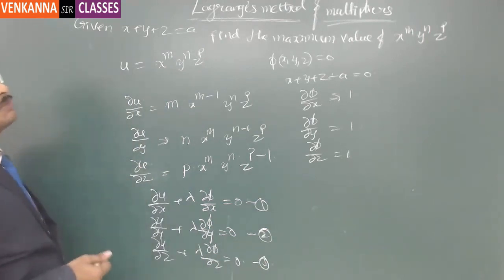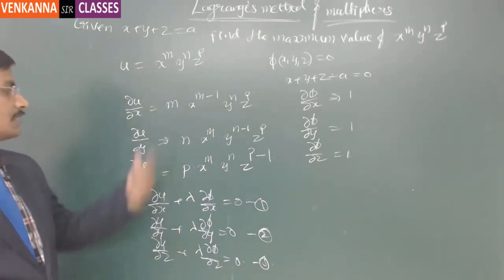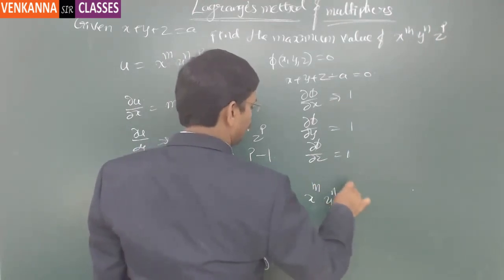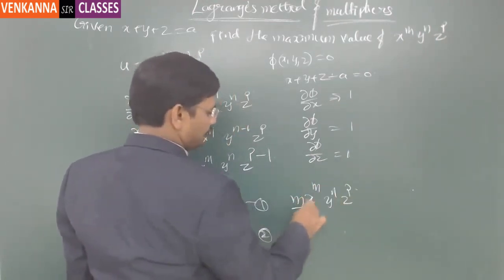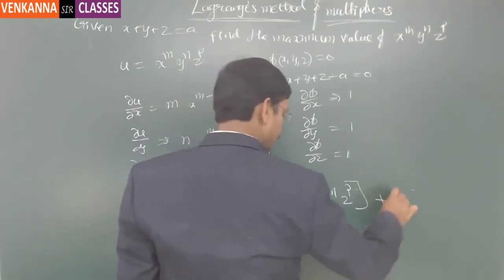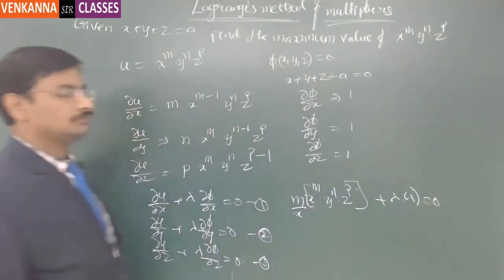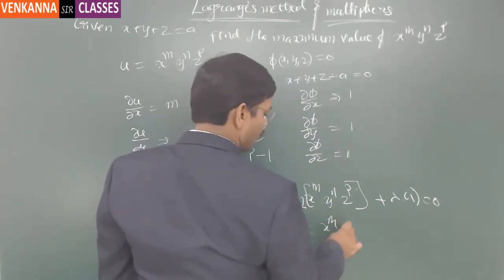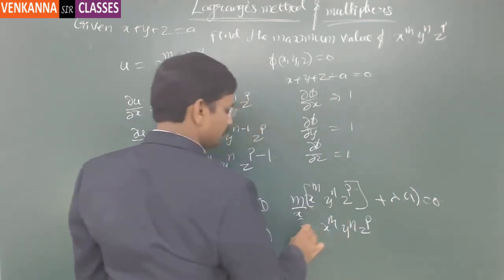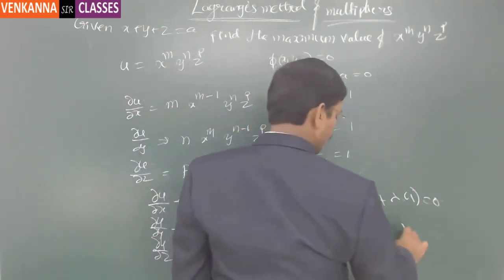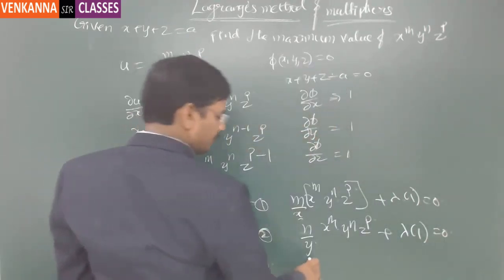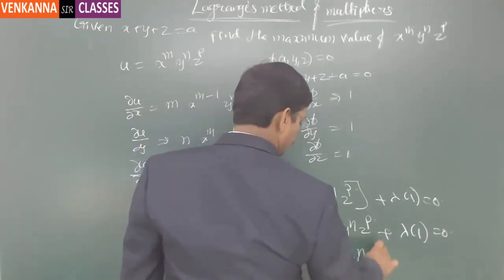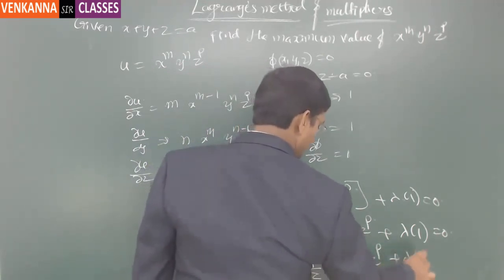Along with the original condition x plus y plus z equals a, we will solve this system. Putting it in the same format: x^m · y^n · z^p times (m/x + λ) equals 0; x^m · y^n · z^p times (n/y + λ) equals 0; and x^m · y^n · z^p times (p/z + λ) equals 0.